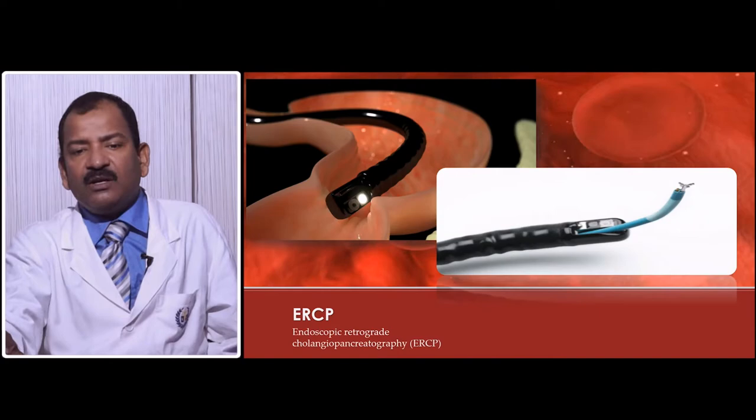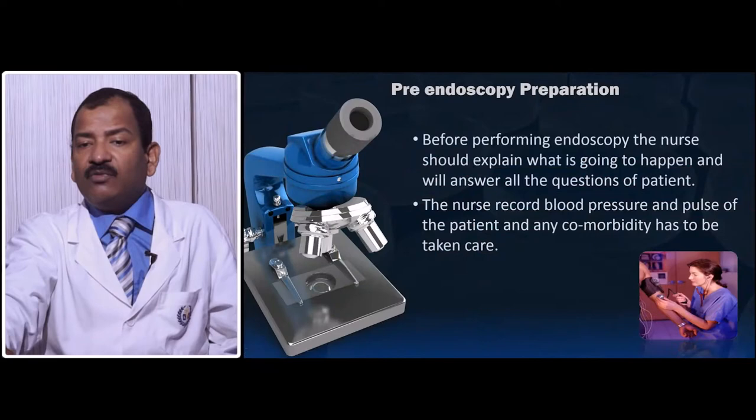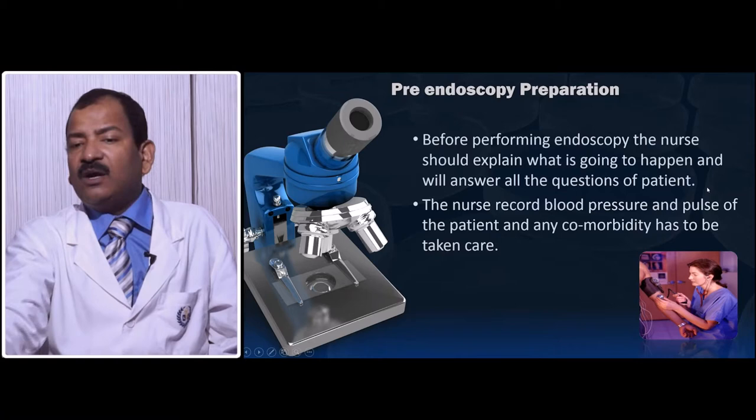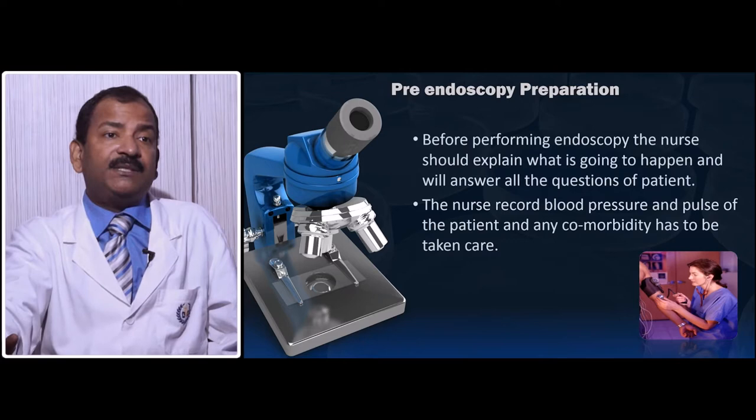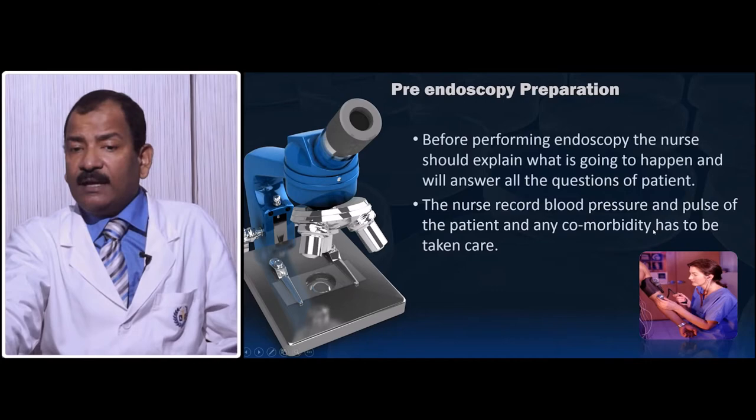Before performing endoscopy, the nurse should explain what is going to happen and answer all questions for the patient. The nurse should record BP, respiration, and all vital parameters, and carefully note all comorbidities. If the patient has any severe comorbidity, it must be noted before starting the procedure.